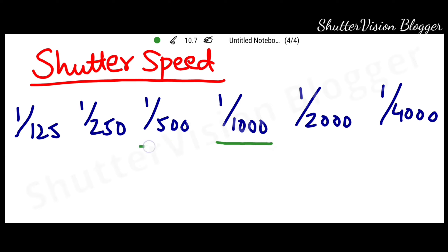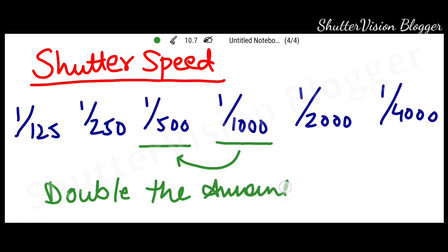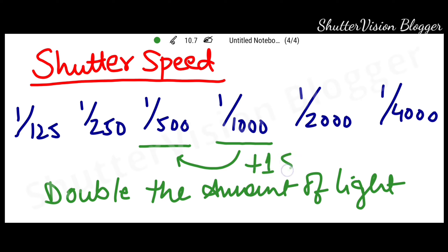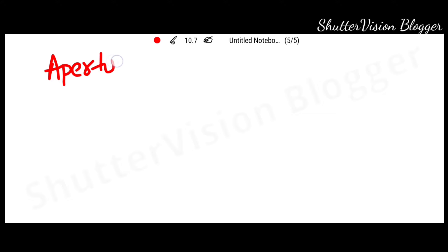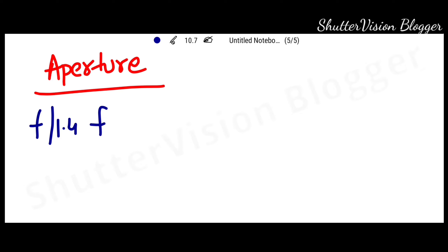Now if we go in the opposite direction with shutter speed, we are adding two stops of light in the image. Now let's go to the aperture. The value of the aperture and the size of the aperture have an inverse relationship. This means if we increase the value of the aperture, then we get less light.